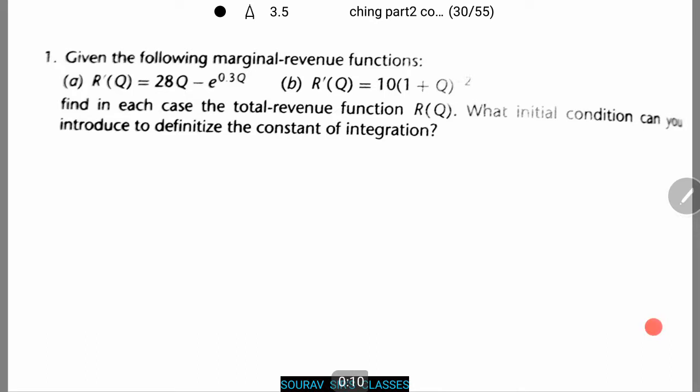We are given the following marginal revenue functions. Let's start with the first one where r'(Q) equals 28Q minus e to power 0.3Q. Now in each case we need to find the total revenue function R(Q) and what initial condition can you introduce to definitionize the constant of integration. Let's see how to do this.